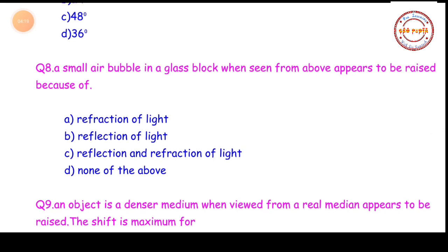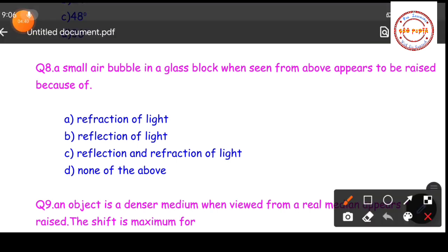Question number eight: a small air bubble in a glass block, when seen from above, appears to be raised because of — (A) refraction of light, (B) reflection of light, (C) both reflection and refraction, or (D) none of the above. The correct answer is refraction of light, because when a ray of light travels from a denser to a rarer medium, it moves away from the normal.